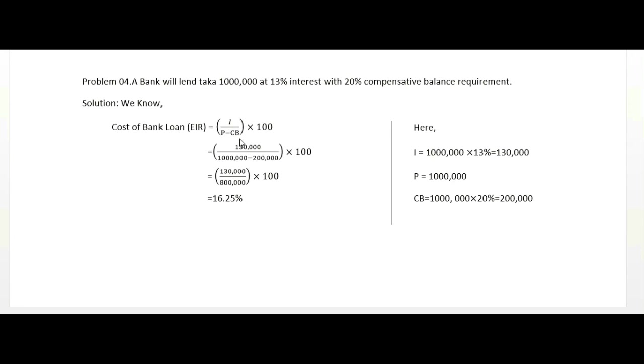Here, interest rate is 13 percent. The compensating balance is 20 percent. This means 20 percent of the principal amount must remain in the bank account and cannot be used.